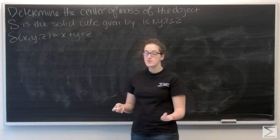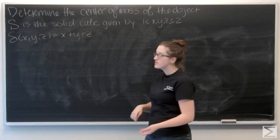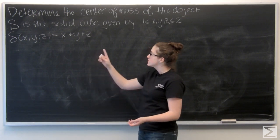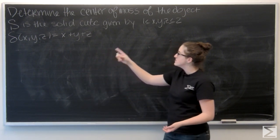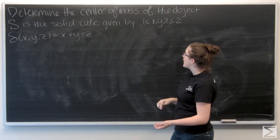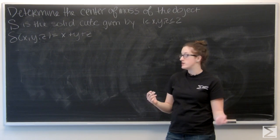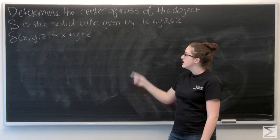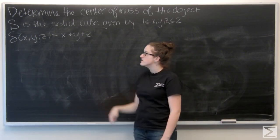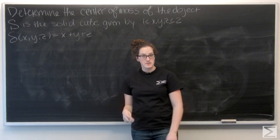For this problem, we're asked to determine the center of mass of an object. We're given S, which is a solid cube given by x, y, and z all between 1 and 2. We're also given the density, which is x plus y plus z.